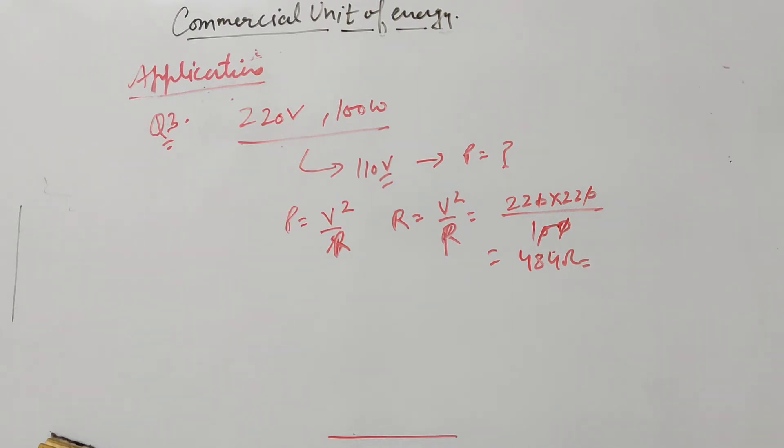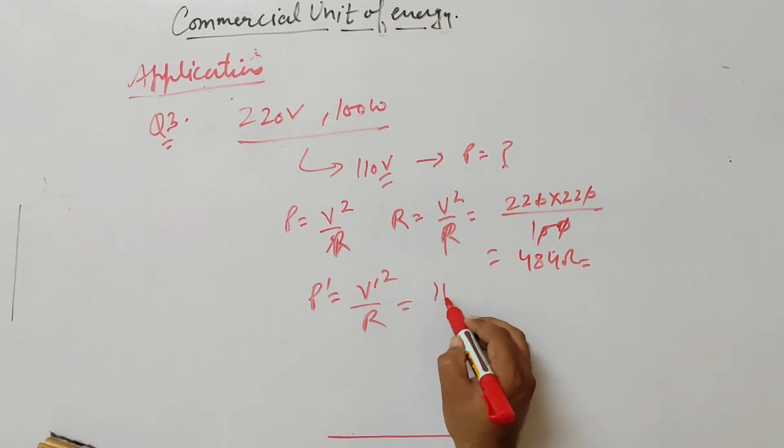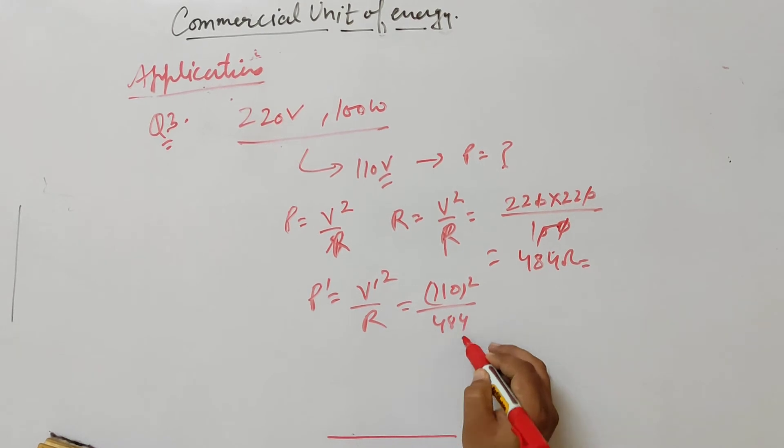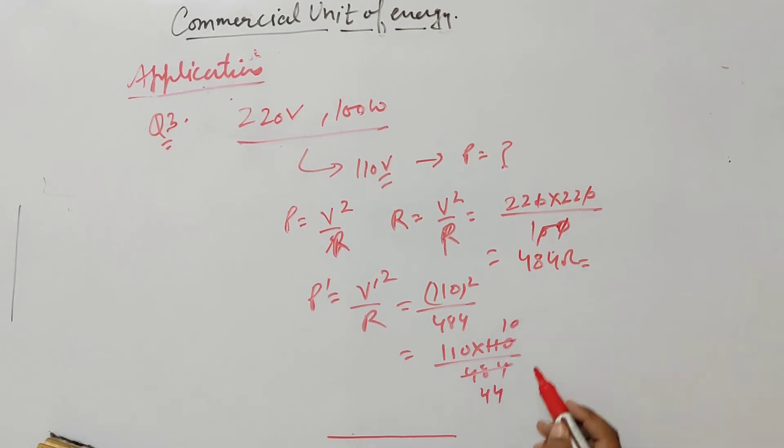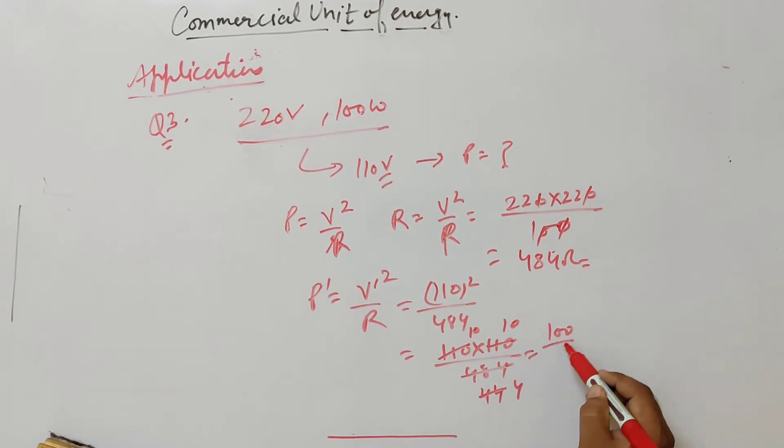Now voltage is half, 110. Next power P equals V squared upon R. V squared is 110 into 110 upon 484. If you solve, 110 into 110 upon 484 equals 25 watts. So power was 100, now power is 25.